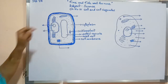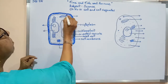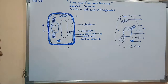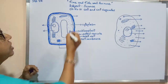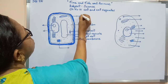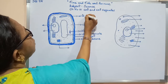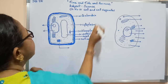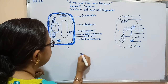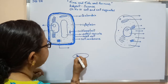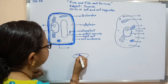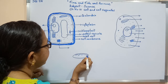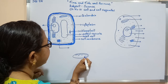Here you can find a membranous bag — this is the powerhouse of the cell. This is known as mitochondria. It has an oval shaped structure and is a double-walled structure.